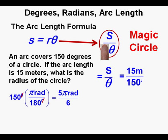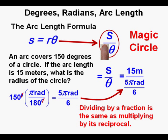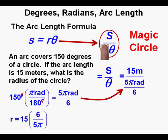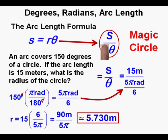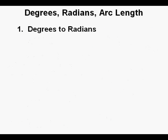Multiplying 150 degrees by pi over 180 degrees, the degrees cancel, giving five pi over 6 radians. So the radius equals 15 meters divided by five pi over 6. Dividing by a fraction means multiplying by its reciprocal: 15 meters times 6 over 5 pi, which simplifies to 90 over 5 pi meters, or approximately 5.730 meters. Since 180 degrees covers more than three times that radius, the answer is reasonable. We box it in as correct.